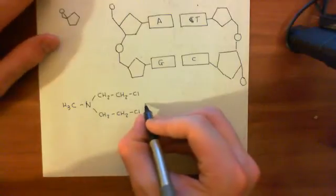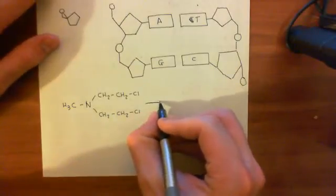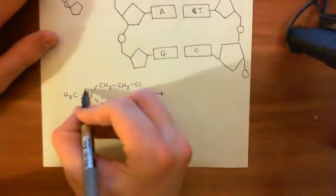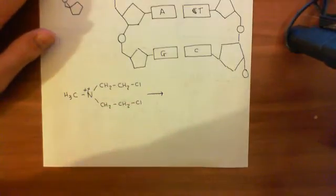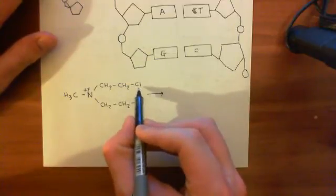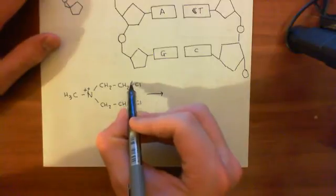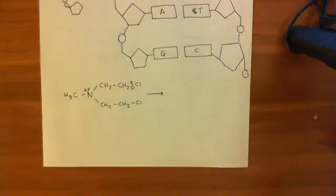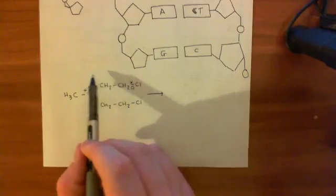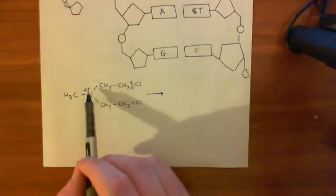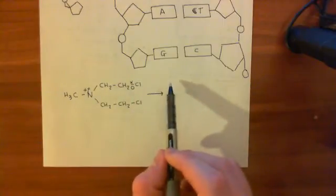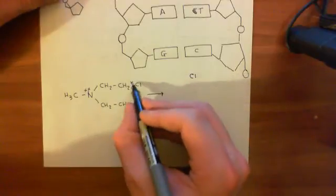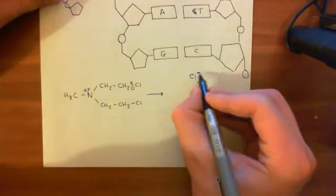This drug undergoes a reaction. Looking at this nitrogen — it has a lone pair of electrons on it. Now look at the bond between the carbon and the chloride atom: there are two electrons in there, one from the carbon and one from the chloride. What can happen is this carbon can choose to bind to this nitrogen atom instead, and give off a chloride anion. The chloride atom takes both electrons in this bond and goes off to form a chloride anion.